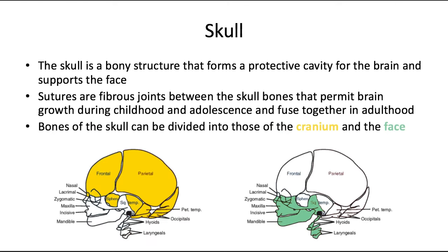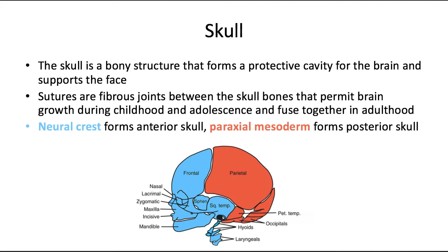The bones of the skull can also be divided into those of the cranium here in yellow and the face here in green. The cranium is the part of the skull that's protecting the brain, and the face of the skull is going to be the part that supports the face. This is a functional division; the previous slide was an embryologic division.